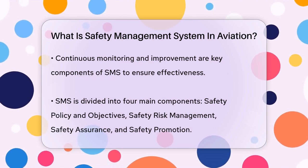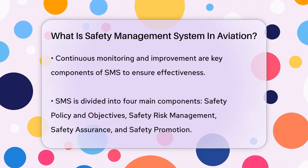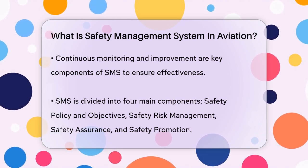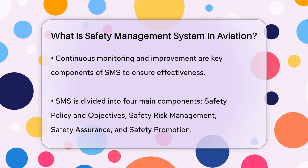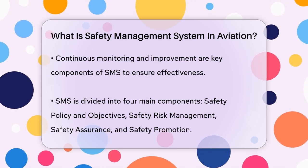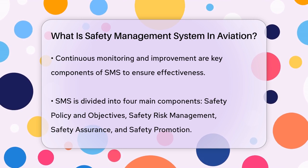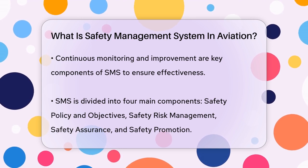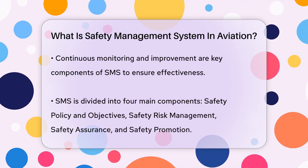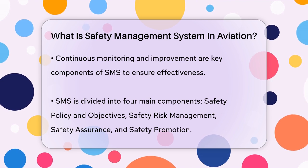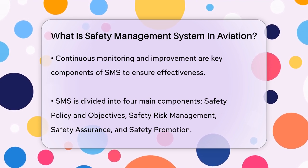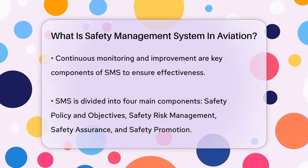The system is divided into four main components: safety policy and objectives, safety risk management, safety assurance, and safety promotion. Each of these components has specific elements that ensure safety is managed comprehensively. For example, safety policy and objectives include management commitment and responsibility, while safety risk management involves hazard identification and risk assessment.